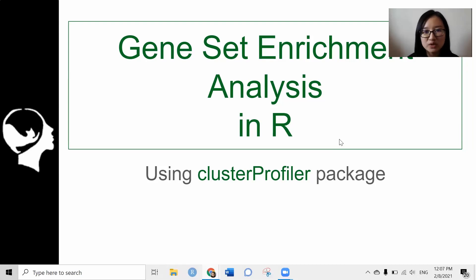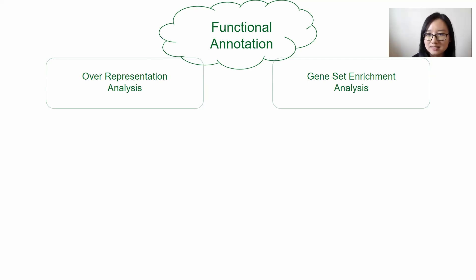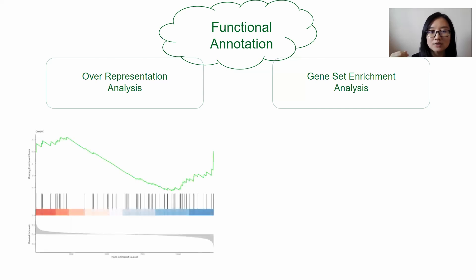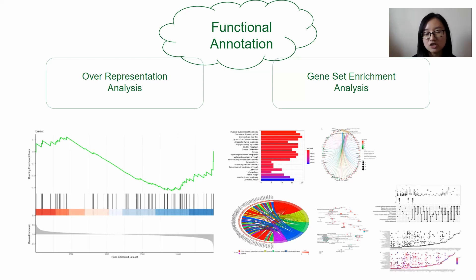Hi everyone, welcome to LiquidWin. This is the step after differential expression analysis. We will do something called functional annotation, and this can be done using two different methods: either over-representation analysis or gene set enrichment analysis. In this video, I'm going to talk about the concept of the analysis and how the tools work, so by the end of the video we should be able to know how to interpret the result and how to prepare all the fancy figures from this enrichment analysis.